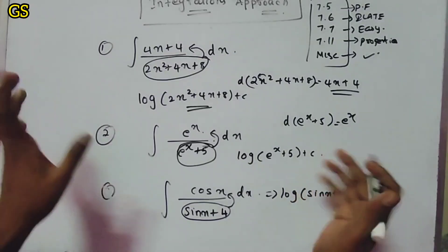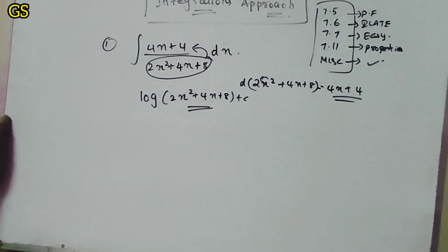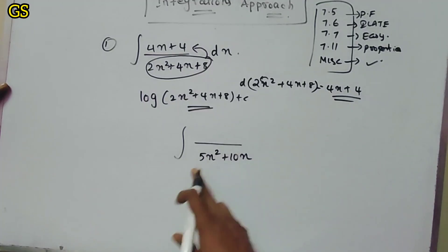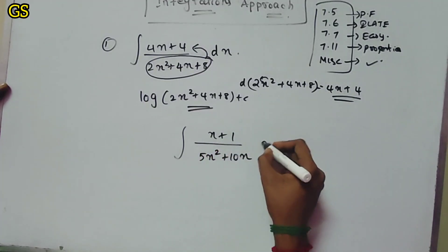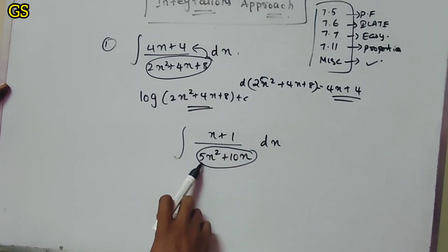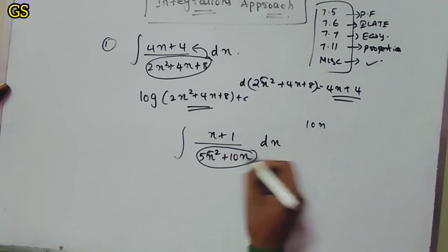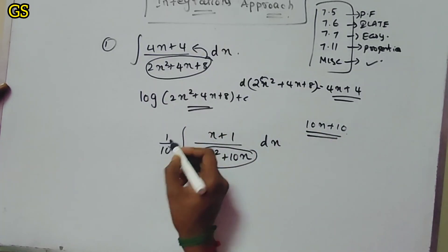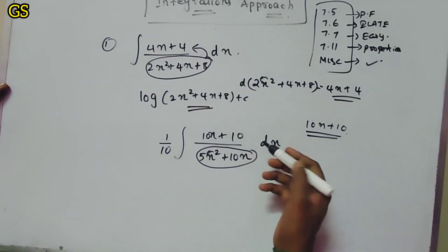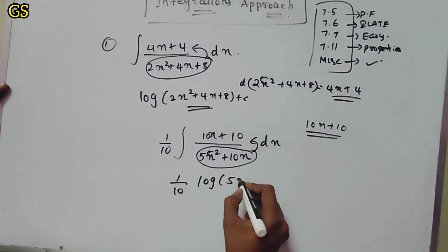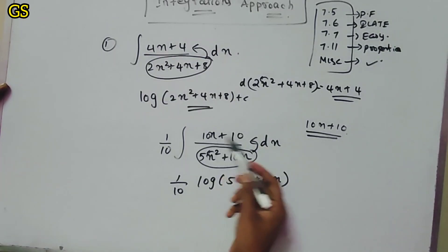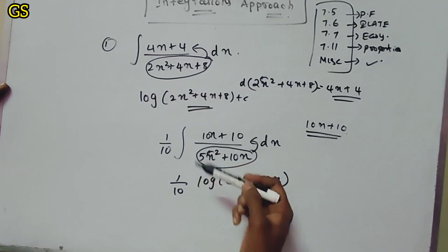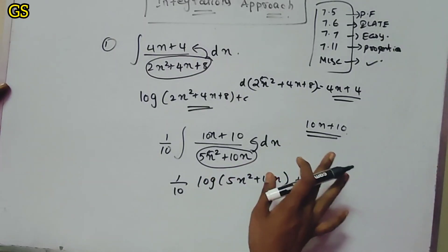If you try to differentiate sin(x+4), we will try to differentiate sin(x+4). If we get the numerator from differentiation and divide, we will get the log of the denominator. This is one type of approach.